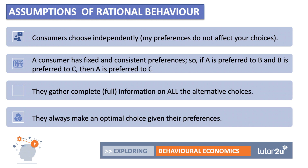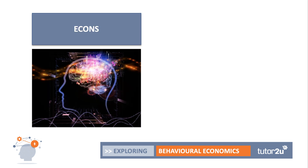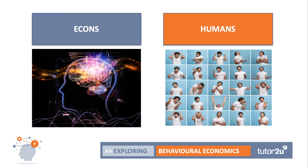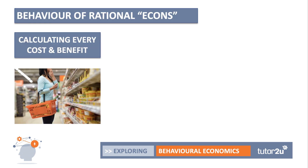These are some of the key assumptions of rational behaviour. And those people who meet those conditions in the economics textbooks are often called ECONS. ECONS are people who essentially inhabit economics textbooks, as opposed to another breed called humans. We'll make a distinction between the two in this short course in behavioural economics.